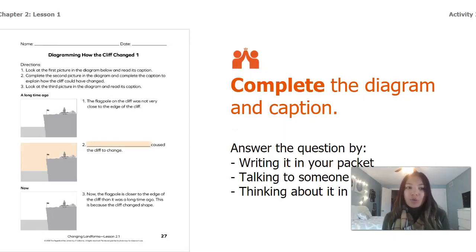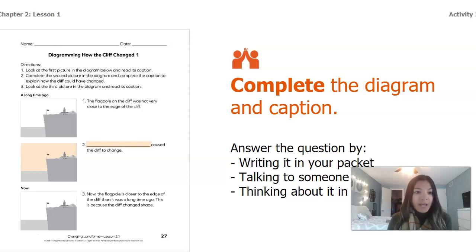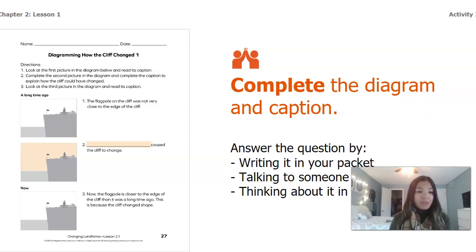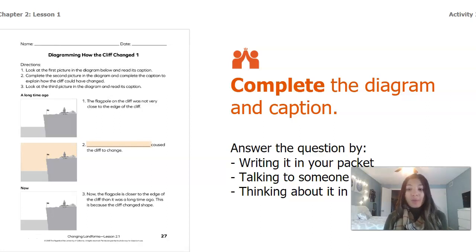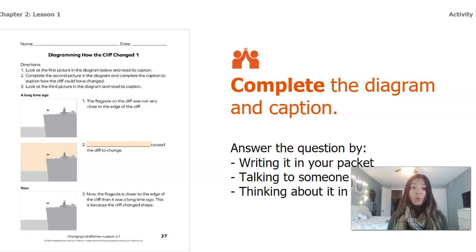In your packets you have a copy of a diagram. You're going to look at the first picture which says 'a long time ago' — the caption says the flagpole on the cliff was not very close to the edge of the cliff. Then look at the second event picture and complete the caption to explain what you think could have happened to make the cliff change. The last picture shows 'now' — the flagpole is closer to the edge of the cliff than it was a long time ago because the cliff changed shape. Pause the video and complete the diagram and caption in your packet.